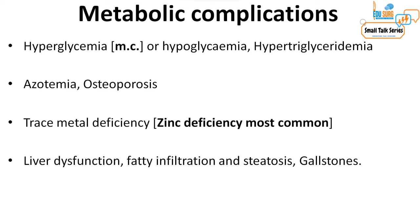Metabolic complications include hyperglycemia — very common as the body adapts to sudden nutrition intake — as well as hypoglycemia and hypertriglyceridemia. There can also be azotemia and osteoporosis. Zinc deficiency is the most common trace metal deficiency, which is why zinc and glutamine supplements are now available separately for patients on enteral and parenteral nutrition. Liver dysfunction, fatty infiltration, steatosis, and long-term gallstone formation are also recognized metabolic complications.